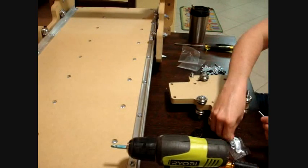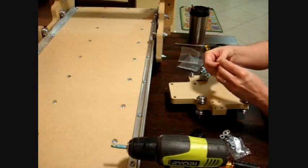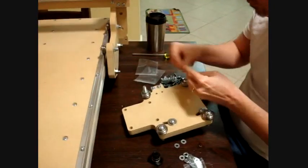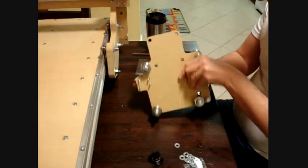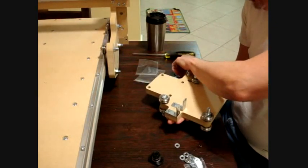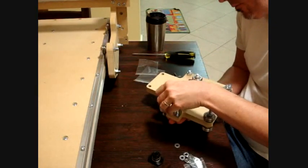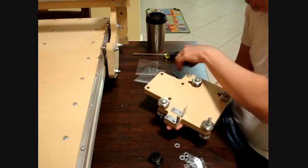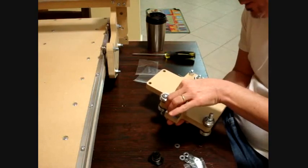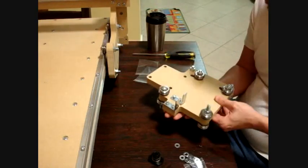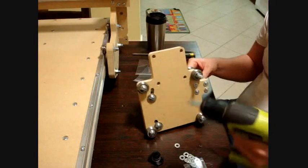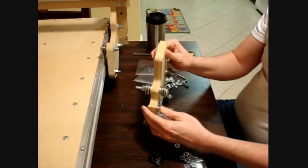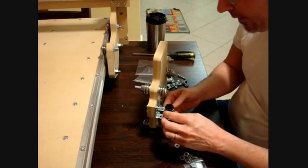We're going to use these one-inch screws with a washer, a small washer, and the nuts. Leave it somewhat loose so we can put the anti-backlash nut on.